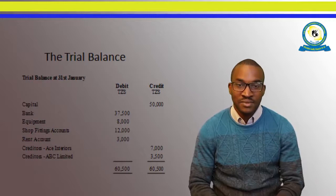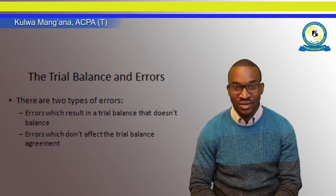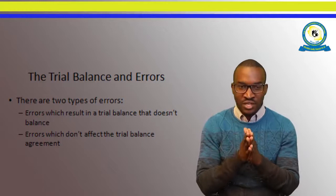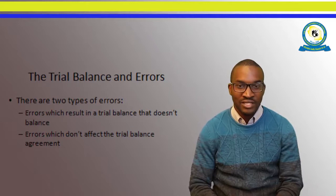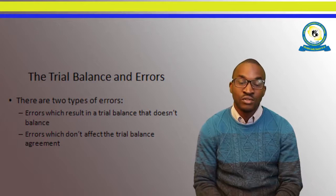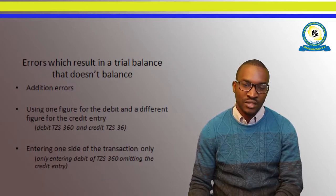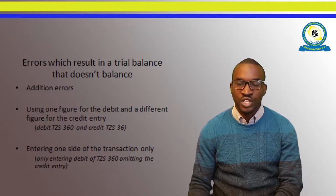Now, sometimes the trial balance might not balance, which means there are some errors. We have two types of errors that may be observed from the trial balance. One type are errors which result in a trial balance that does not balance — you will know there is an error. But there are also errors which do not affect the trial balance; the trial balance appears to be okay with debit balances equaling credit balances, but in actual sense there is an error. Let us look at those errors that result in a trial balance that does not balance.